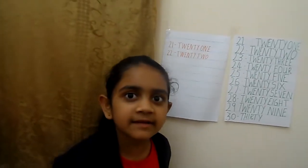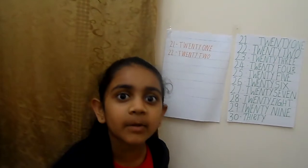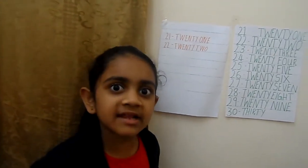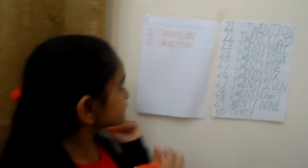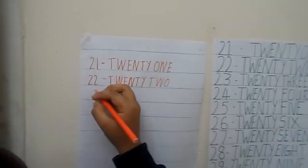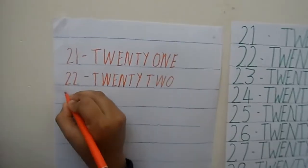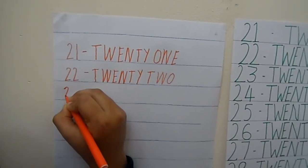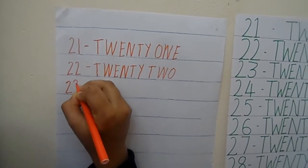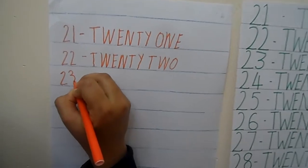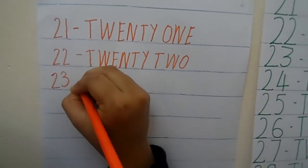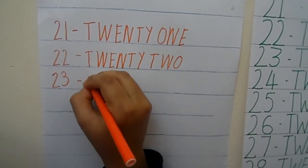Now what is the next number? 23. So let's see how to write it. 2, then a 3. Now let's see the number name of 23: T, W, E, N, T, Y, T, H, R, E, E.